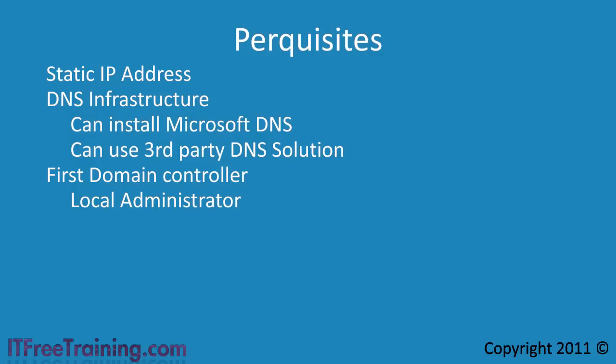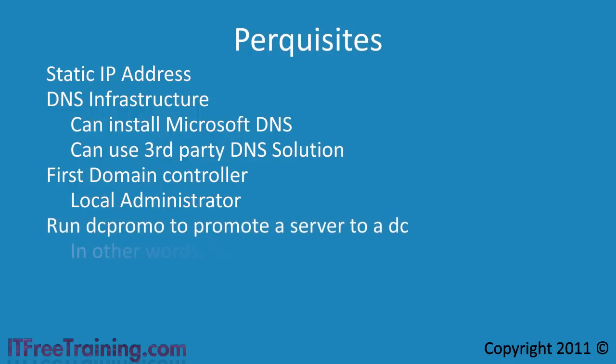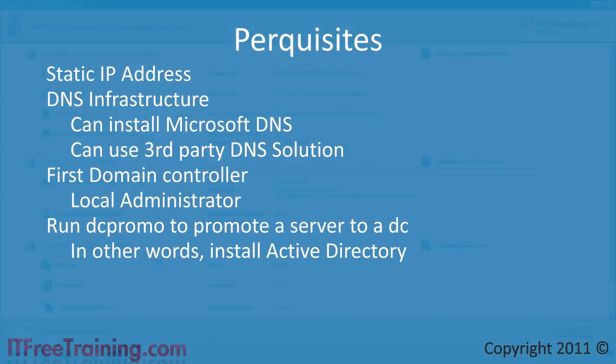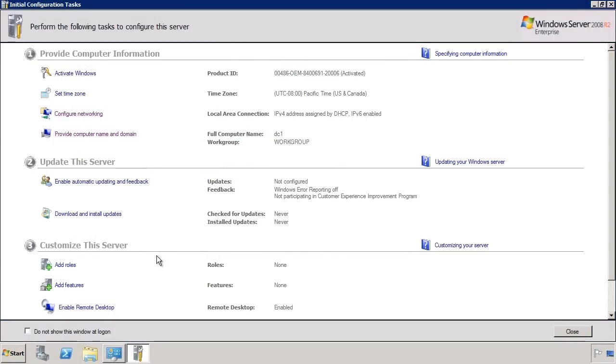Once you are ready to install your first domain controller or add an additional domain controller to any existing network, run the command DC promo. The process of changing a server into a domain controller is called promotion. It is common for people to say 'I am going to promote this server to a domain controller.' I will now change to my Windows Server 2008 server to demonstrate this process.